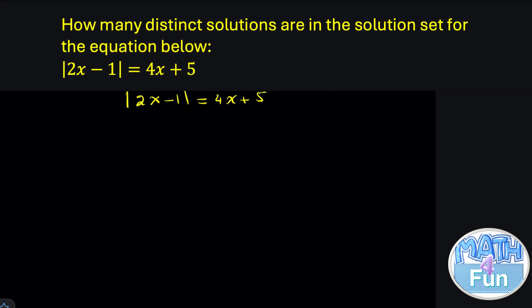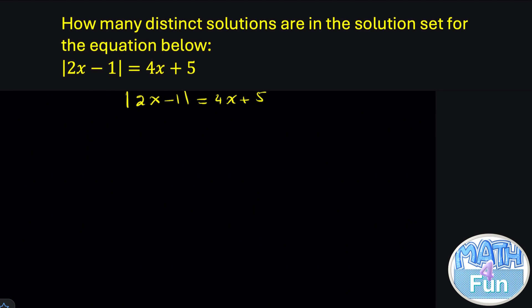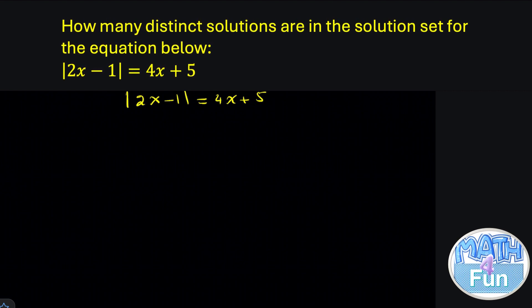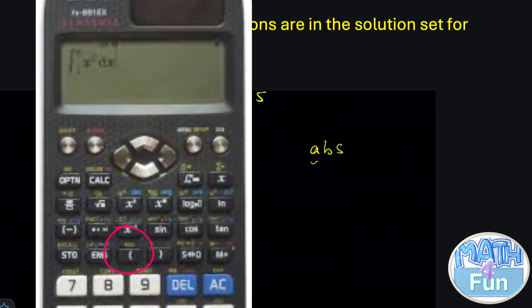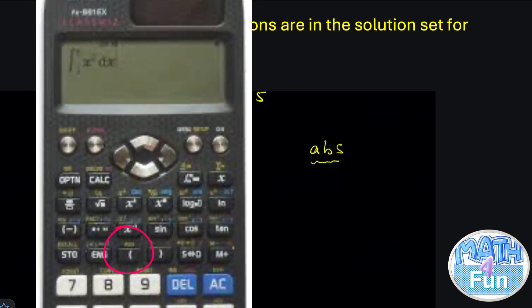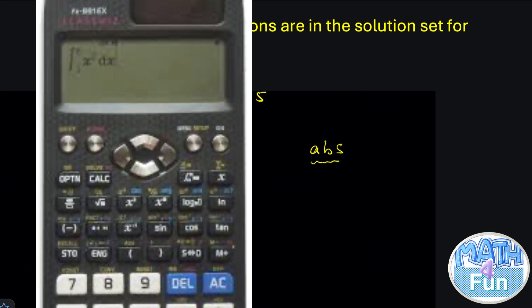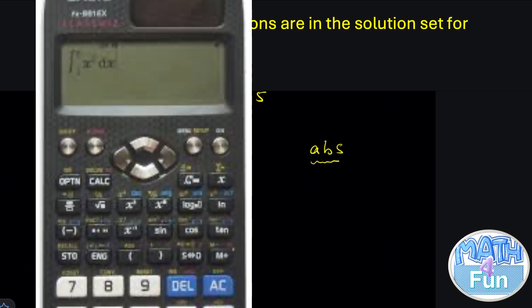You know the way of the shift solve by calculator. Here we have absolute value. So there is a key on the calculator which is called ABS. A-B-S. This represents the absolute value. So you can press it and type the equation as it is.